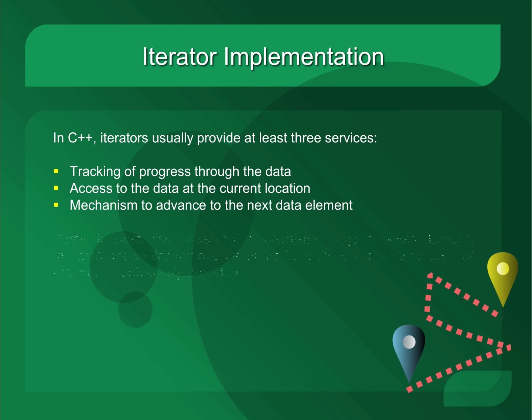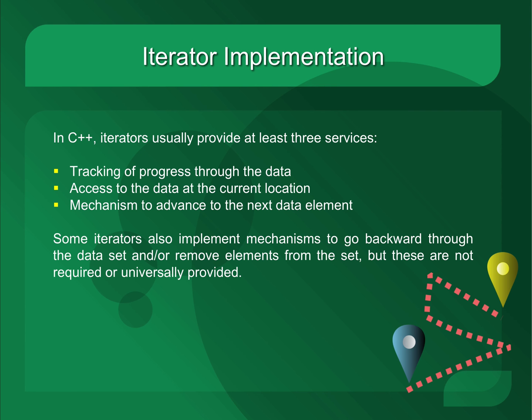Now, some types of iterators also implement ways for us to go backwards through the data or ways to remove data, but this is not necessarily something that's provided across the board. A lot of data types will only allow you to move in one direction or are read-only.